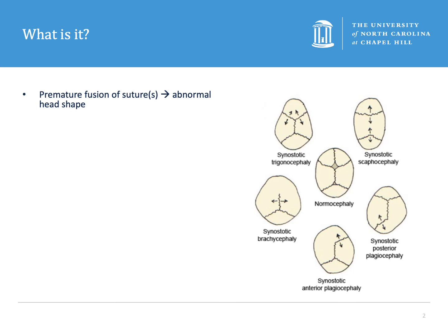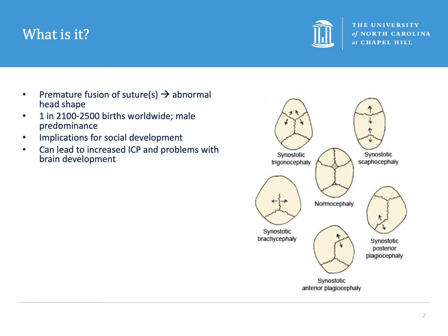So what is craniosynostosis? It's the premature fusion of the bony sutures of the skull resulting in abnormal head growth. There's a male predominance and it occurs in 1 in 2,100 to 2,500 births worldwide. This abnormal head shape has implications for social development as patients get older, and in particular in multi-suture synostosis there is a concern for development of increased ICP and brain development problems as well.